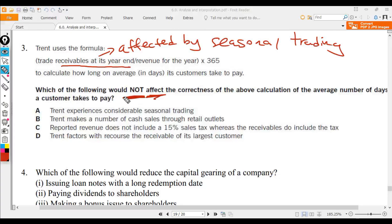Number two: the company makes a number of cash sales. Cash sales will affect your calculation because you didn't use credit sales.